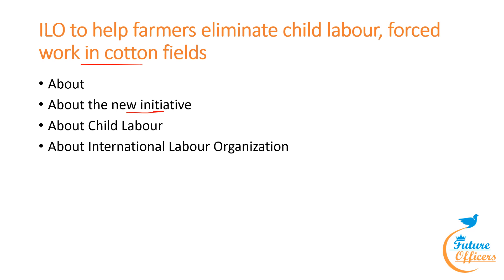The joint project 'Promoting Fundamental Principles and Rights at Work' aims to improve labor conditions among cotton farmers. The focus areas include freedom of association, collective bargaining, elimination of child and forced labor, abolition of discrimination, and ensuring a safe working environment. The initiative will impact around 6.5 million cotton farmers across 11 states in India.